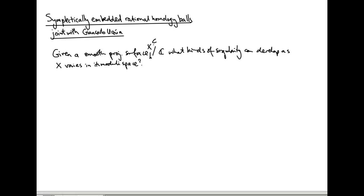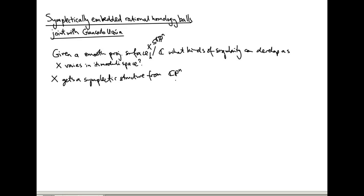I'm going to fix a projective embedding, so X sits inside ℂP^N for some N. Once you have that, you can pull back the Fubini-Study Kähler form from ℂP^N to X. So X gets a symplectic structure from ℂP^N. The fantastic thing about this symplectic structure is that it doesn't really depend on X.